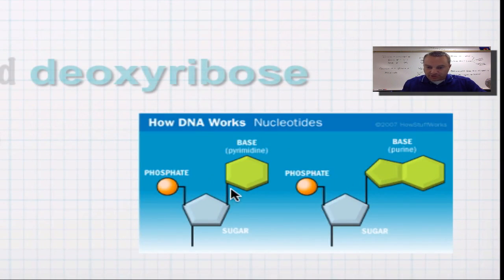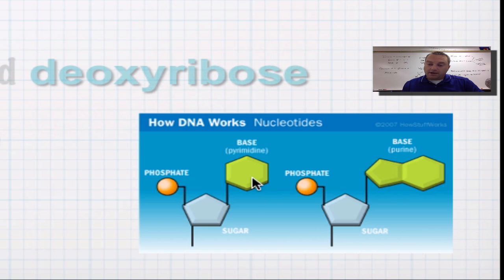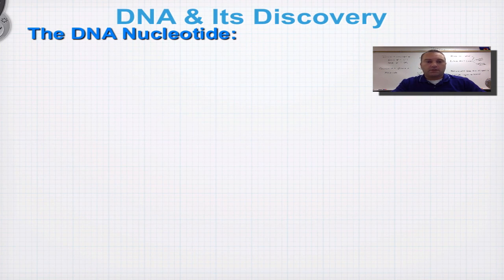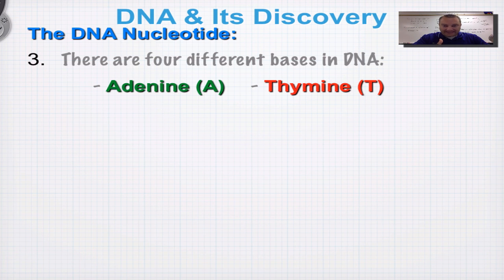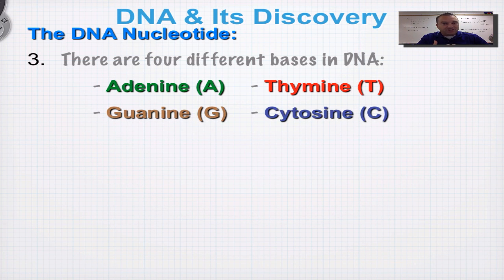The nitrogenous base is going to be one of four: adenine, thymine, guanine, and cytosine. In this picture, the pentagon is the sugar, the orange circle is the phosphate group, and the carbon rings represent the nitrogenous bases. Adenine is abbreviated A, thymine is T, guanine is G, and cytosine is C — so A, T, C, and G are your four DNA bases. The nitrogenous bases come in two types: those with a single ring and those with a double ring.